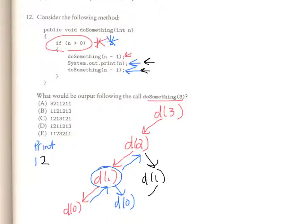And inside do something 1, I call do something 0, which nothing happens. So I kick back up to do something 1, and that's where I print a 1. Now, I'm right here. I come down, and I go to do something 0.